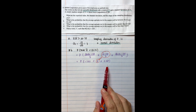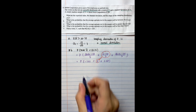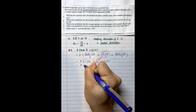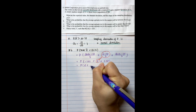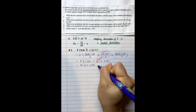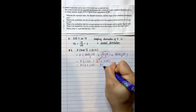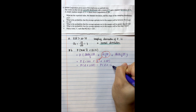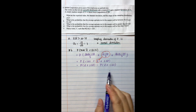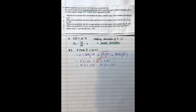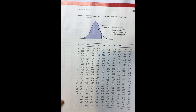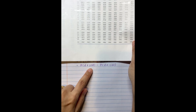We convert the normal distribution into the standard normal distribution, giving us the probability of negative 1.62 less than or equal to z less than or equal to 2.38. Based on the standard normal distribution, we can use the z-table to find the probability. This probability equals P(z ≤ 2.38) minus P(z ≤ -1.62).